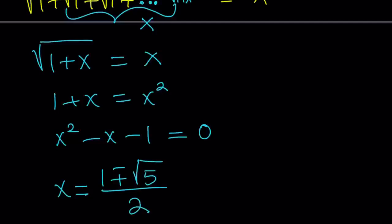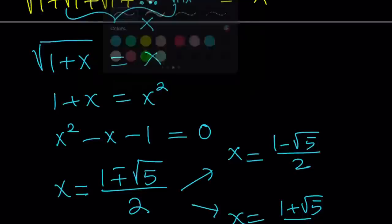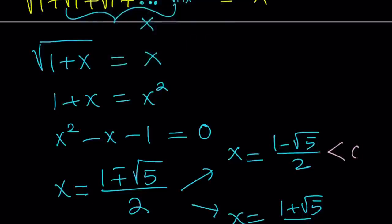This quadratic equation has two solutions. One of them is x, 1 minus root 5 over 2, and the other one is 1 plus root 5 over 2. Unfortunately, maybe fortunately, 1 minus root 5 is less than 0. Therefore, this is a negative quantity. Why did I say that?